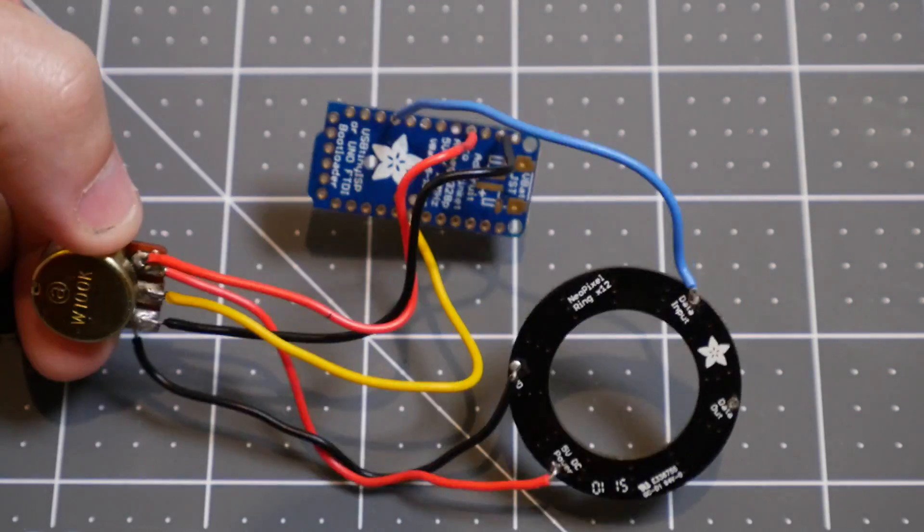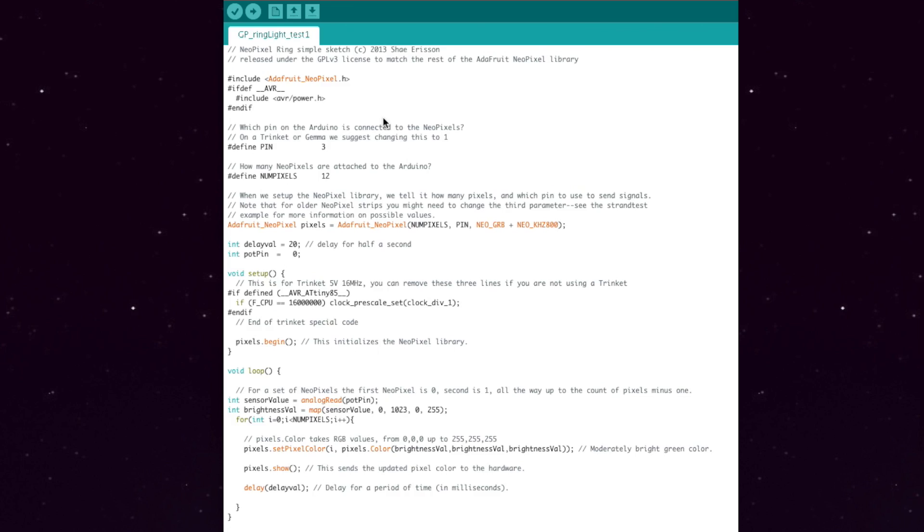That's all the wiring, now let's look at the code. This is just a modified version of one of the example sketches that comes with the Adafruit NeoPixel library. First you include that library, then you set the number of the digital pin that you connected your data input to, then you set the number of pixels in your ring, the number of the pin that you connected your potentiometer to, and then the code actually runs in a loop.